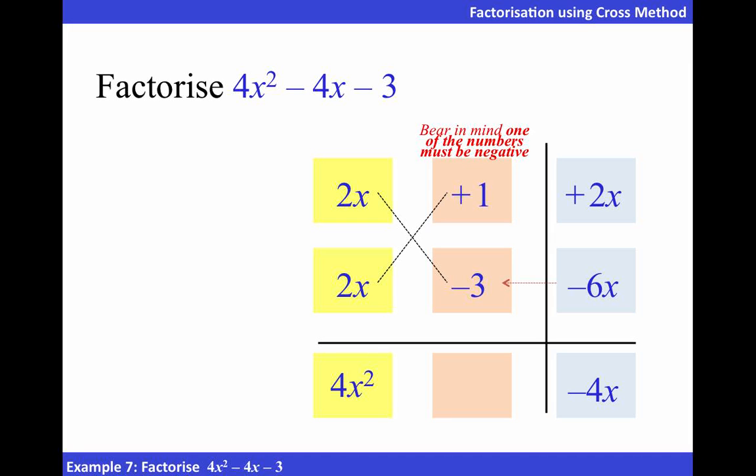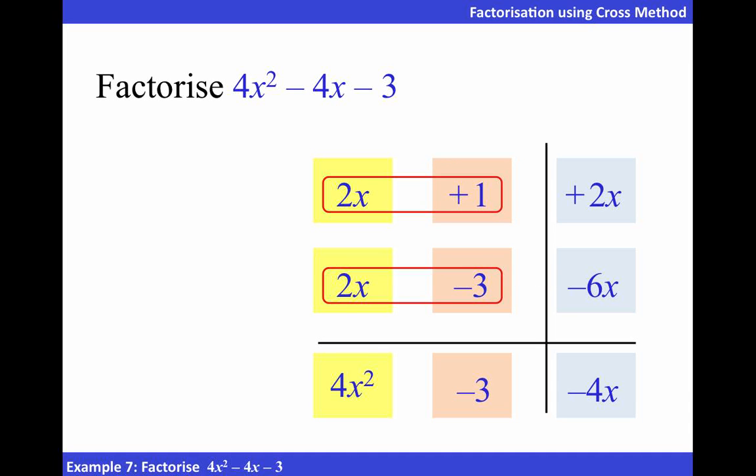Now, let's multiply positive 1 and negative 3. We get negative 3, which is the constant term given in the original expression. And therefore, the factors are 2x plus 1 and 2x minus 3.